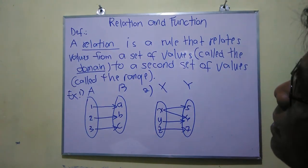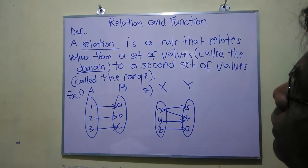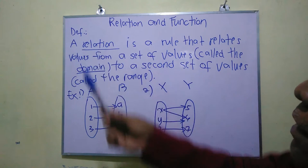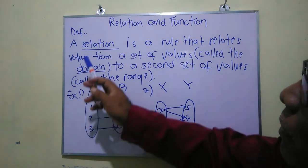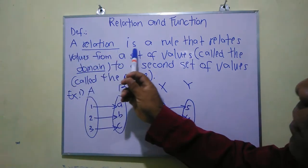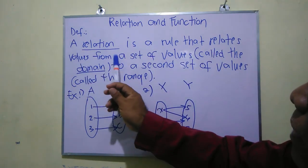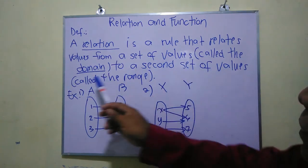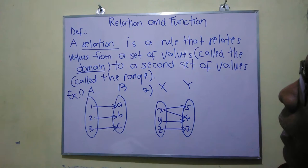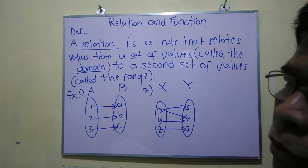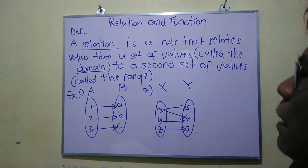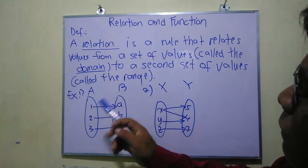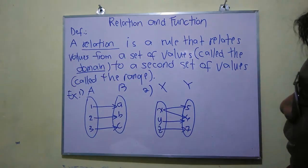Our first topic is about relations and functions. Let us tackle first the relation. By definition, a relation is a rule that relates values from a set of values called the domain to a second set of values called the range. So in a relation, it talks about two sets — there are values in set A, called the domain, and values in set B, called the range.